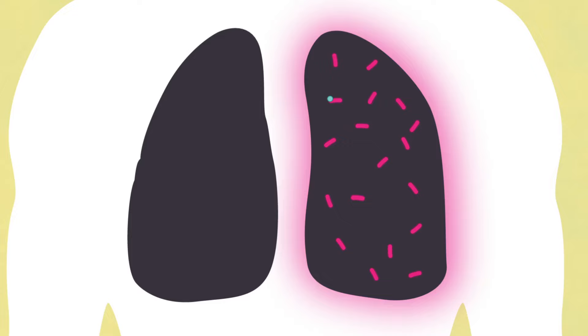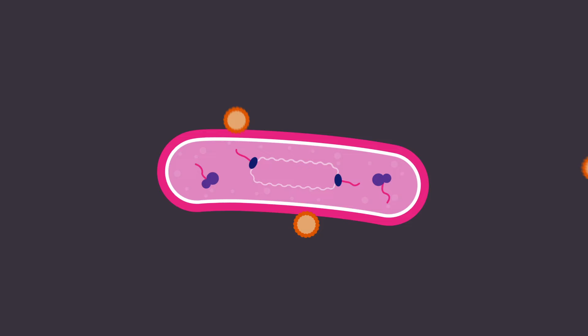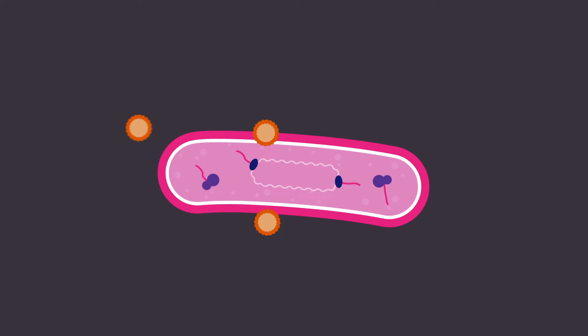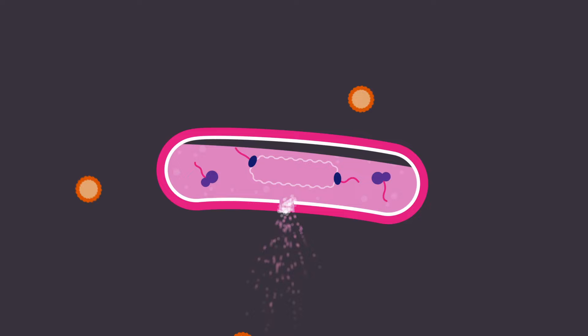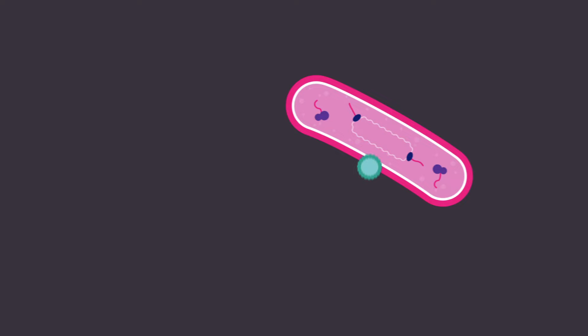They work by targeting essential processes in the bacterial cell. For example, antibiotics can kill bacteria by preventing production of their cell walls or by making holes in the cell membrane, causing essential components to leak out. Other antibiotics stop the bacteria from growing.